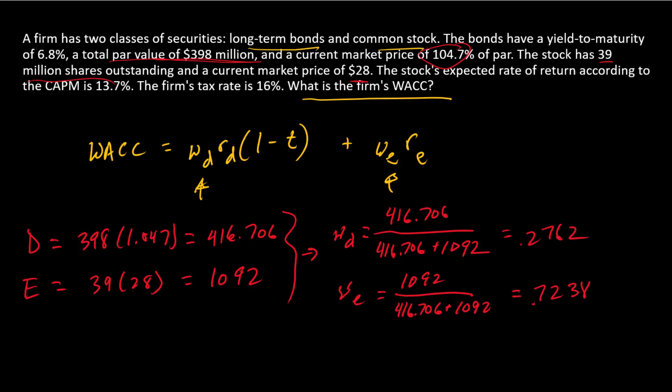Now we can go back to our original equation, write that down here, insert our components, and we should have it. So the WACC is equal to WD, that's 0.2762, times cost of debt. So the cost of debt is the yield to maturity on the firm's bonds. Now that's a pre-tax number, so we're going to multiply by 1 minus the tax rate.